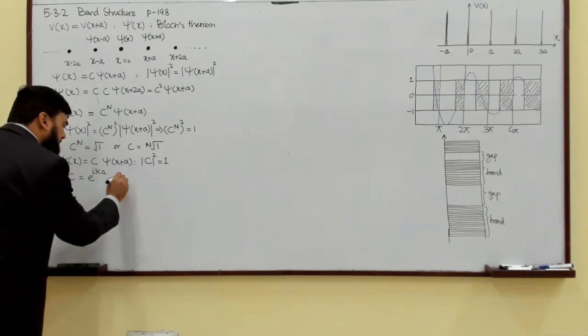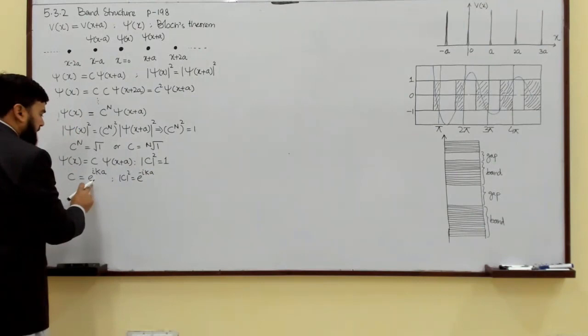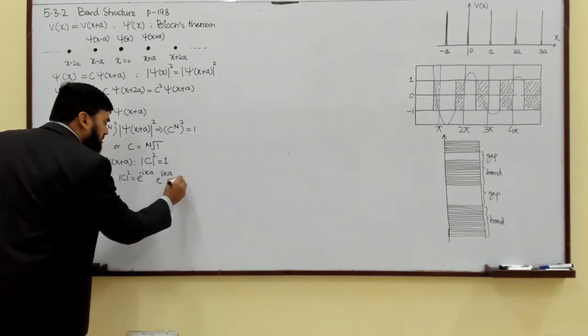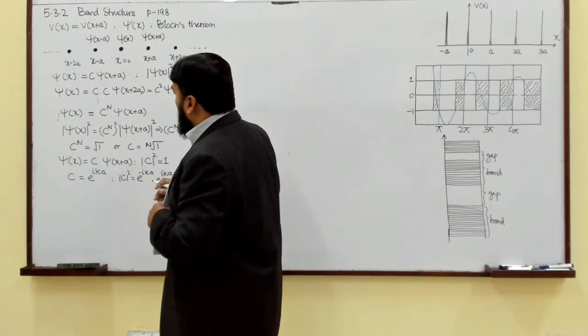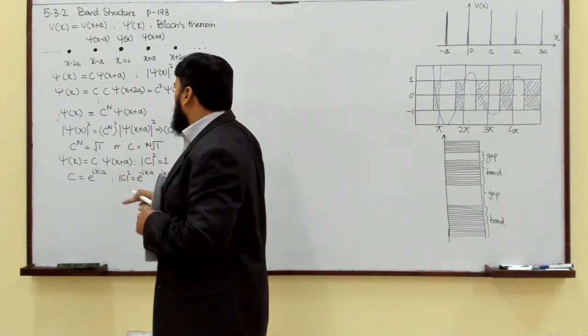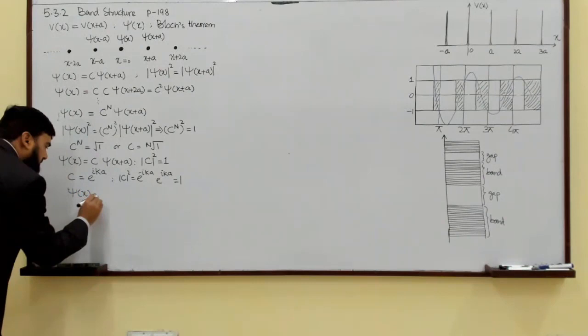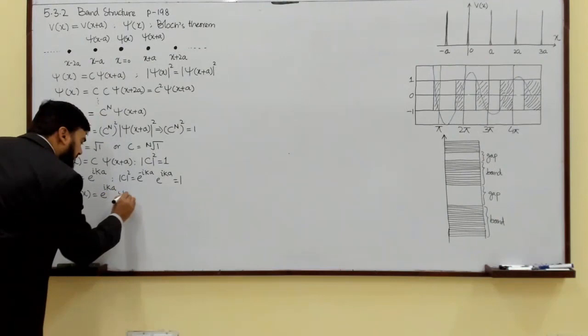So ψ(x) = e^(ika) · ψ(x + a). Now there is one more point: e^(ika) and e^(−ika) are equivalent for our purposes, because when we take the mod square, the minus sign becomes plus and we still get 1. So c works for both plus and minus signs.